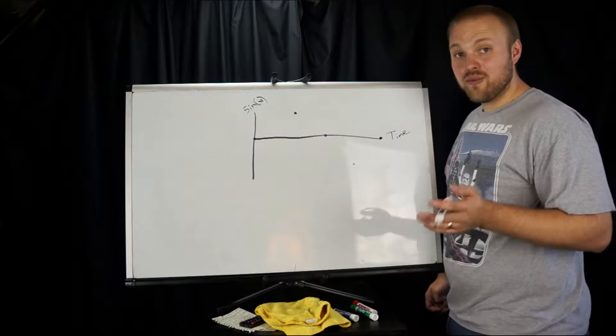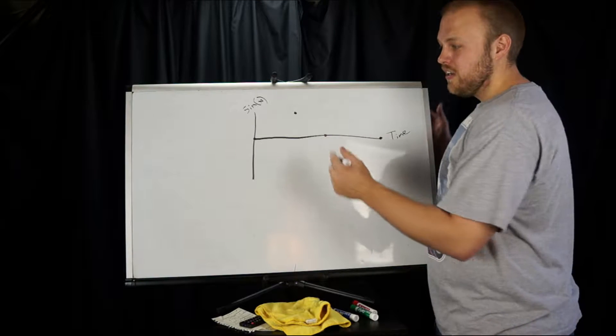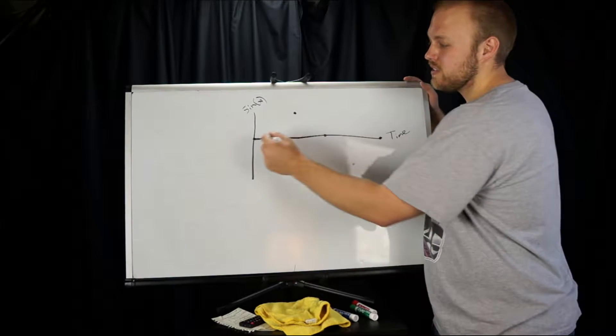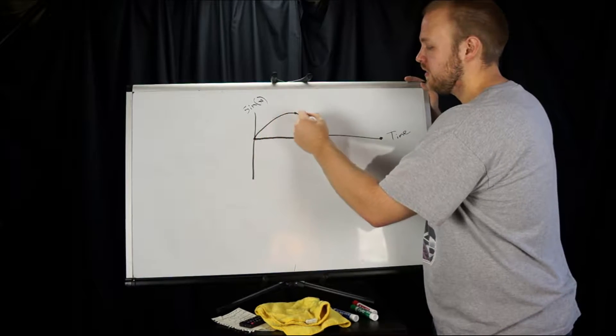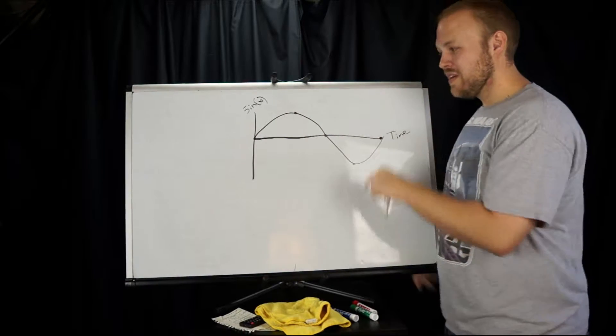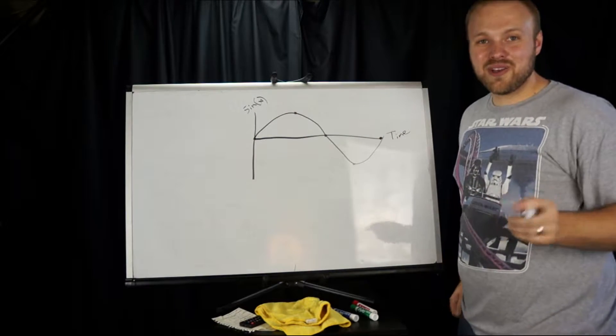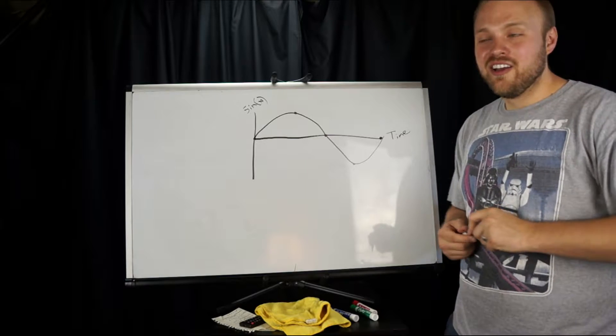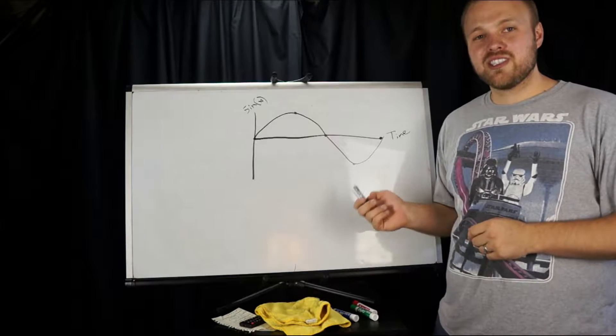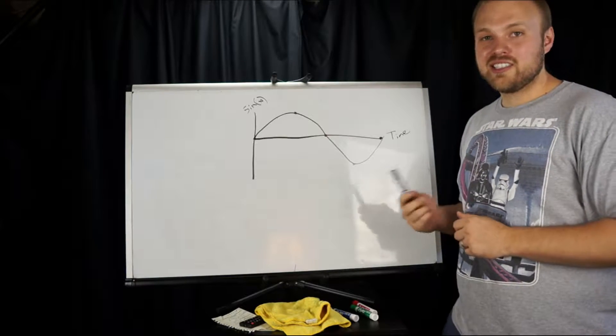Now if we did that on a lot more than just those four points, things would smooth out, and you would get something like this. This, my friends, is what you hear coming out of your speaker. This is a mathematical representation of sound and sound waves.